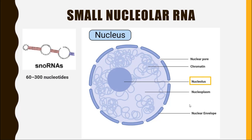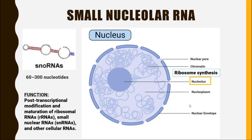As we know, ribosomal synthesis occurs inside the nucleolus. So the function of small nucleolar RNA is post-transcriptional modification and maturation of ribosomal RNA, small nuclear RNA, and other cellular RNA.